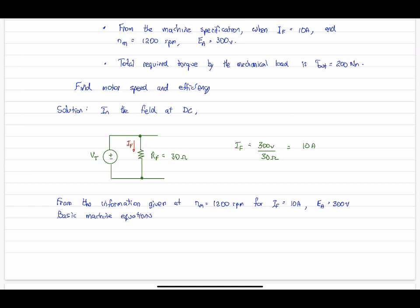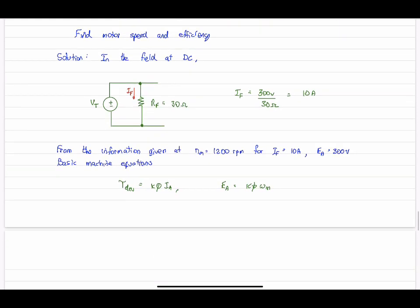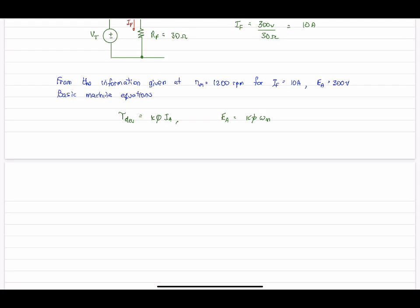So now we can go to work on the machine equations. Once again, torque is proportional to armature current, and induced voltage is proportional to omega M speed. So once again, the constant of proportionality is the machine constant, K phi. From the information given, we can calculate the machine constant. So 300 volts, 1200 RPM, and this works out to 2.387.